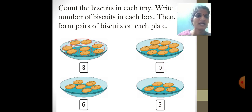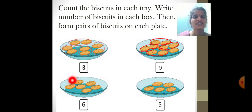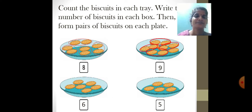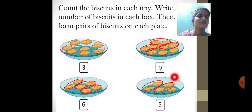Now make pairs from 9 biscuits: 1, 2, 3, 4 pairs, and only 1 biscuit is unpaired. Third tray: count the biscuits — 1, 2, 3, 4, 5, 6 — the count is 6. Make pairs: 1, 2, 3 — three pairs, no biscuit left unpaired. Fourth tray: 1, 2, 3, 4, 5 biscuits. Make a pair: 1, 2 pairs — only 1 biscuit is unpaired.